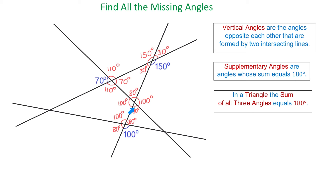Now let's take a look at this triangle. If one angle is 80 degrees and the second one is also 80 degrees, then this one has to be 20 degrees, so the sum of these three angles has to be 180 degrees. Then this angle is also 20 degrees. And if this angle is 20 degrees, then this one has to be 160 degrees because they are supplementary angles. Then this angle is also 160 degrees.